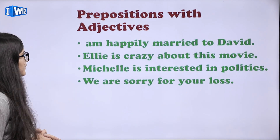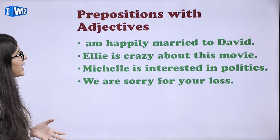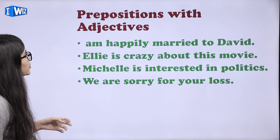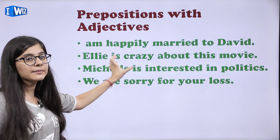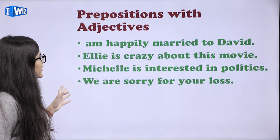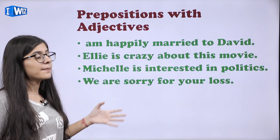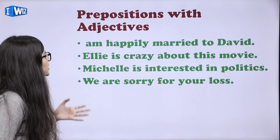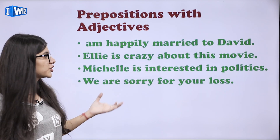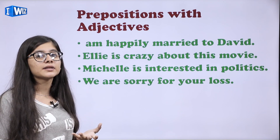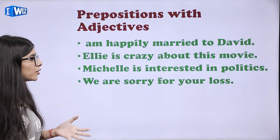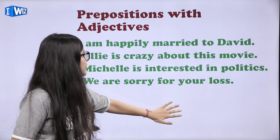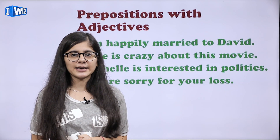Prepositions with adjectives. I am happily married to David — so 'to David', happily married 'to' David. L.A. is crazy about this movie — 'about' kya ho jayega preposition, crazy kiske liye — movie ke liye. Michelle is interested in politics — Michelle woh interested hai politics ke andar, so 'in'. We are sorry for your loss — 'for your loss', sorry hai kiske liye — tumhare loss ke liye. So these were the adjectives and their types.